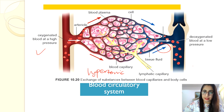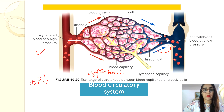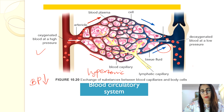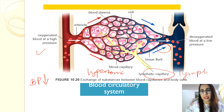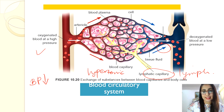The blood pressure decreases as blood flows from the constricted capillaries into the wider venules. The remaining 15% of tissue fluid flows into the lymphatic capillaries to form lymph, which is then returned back into the blood circulatory system.